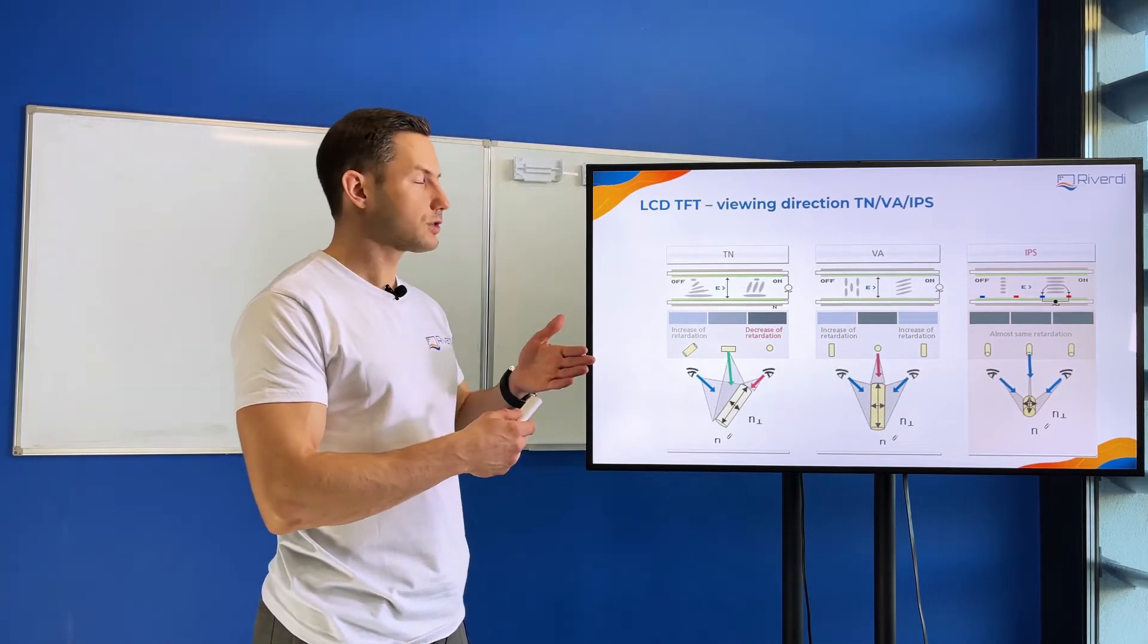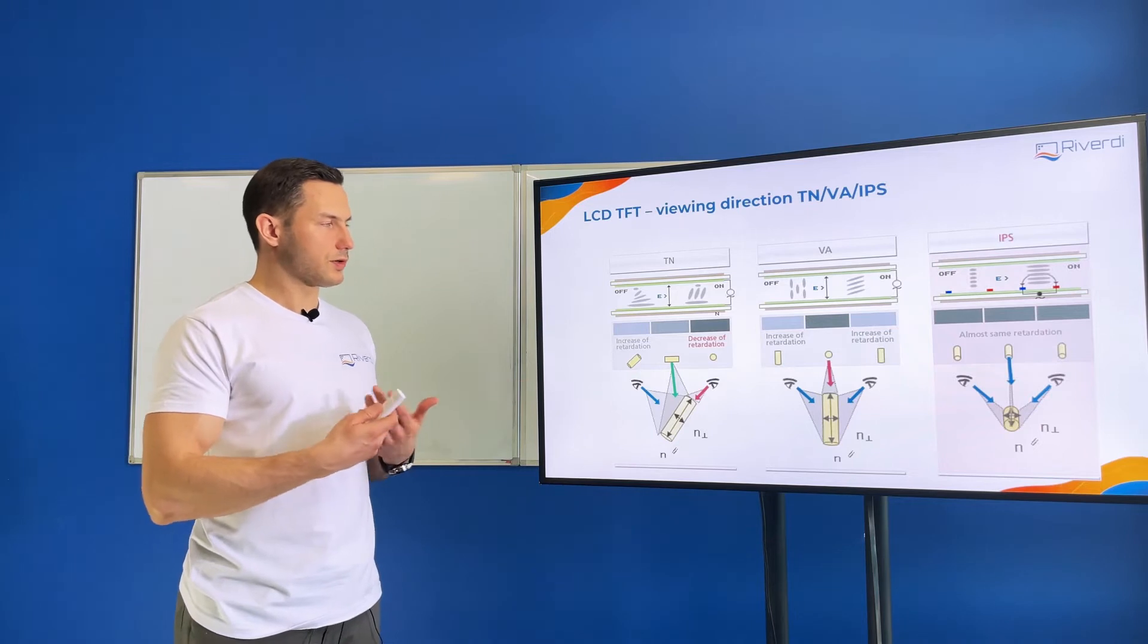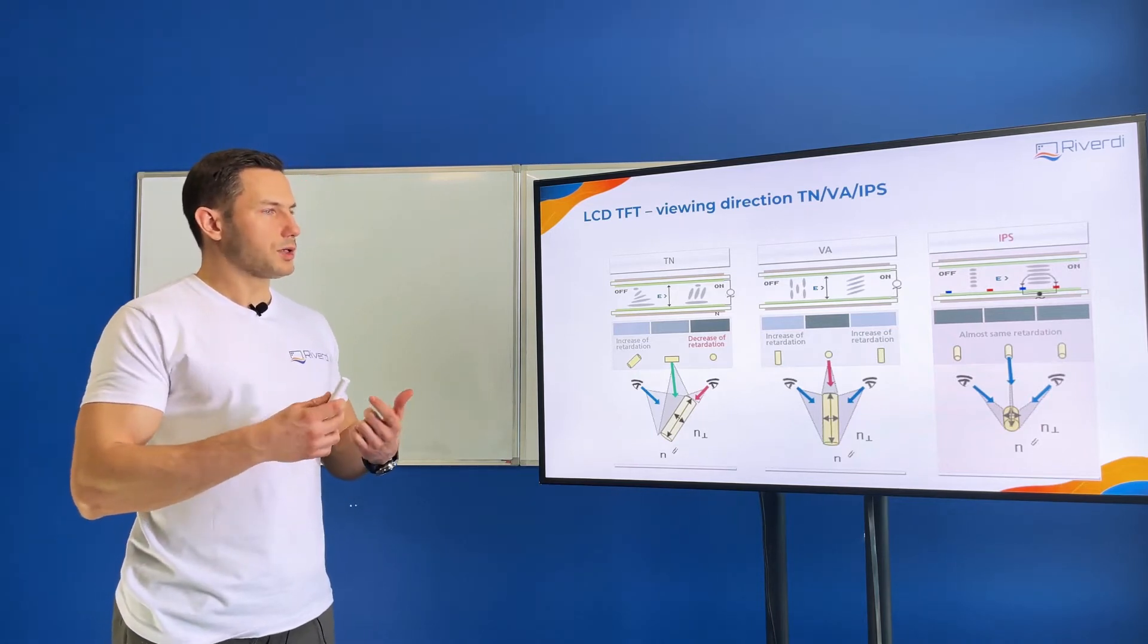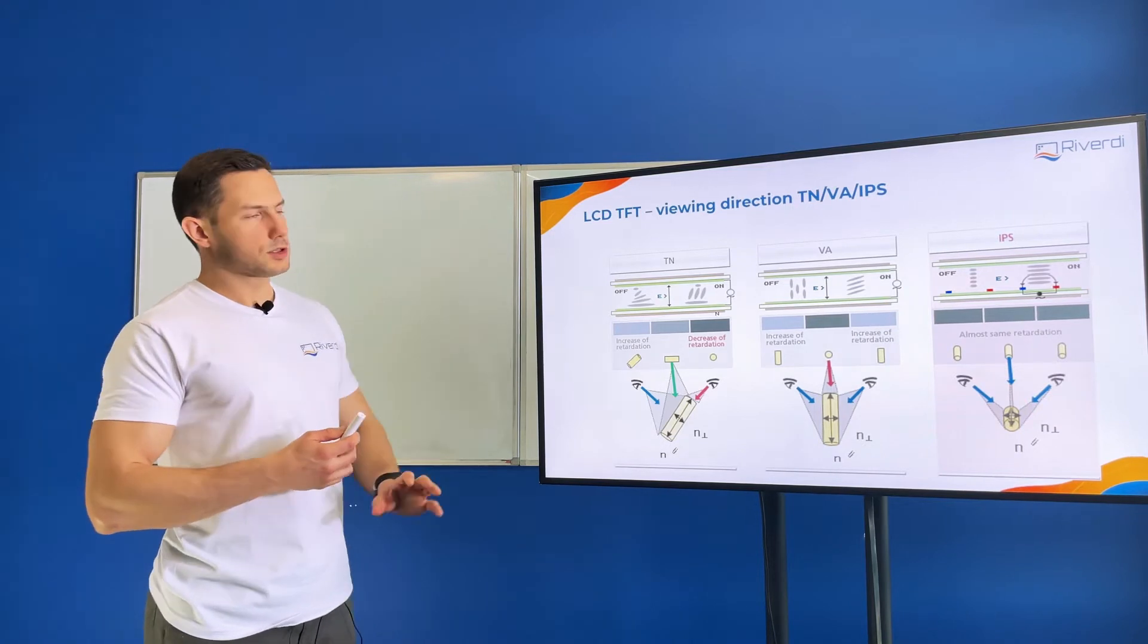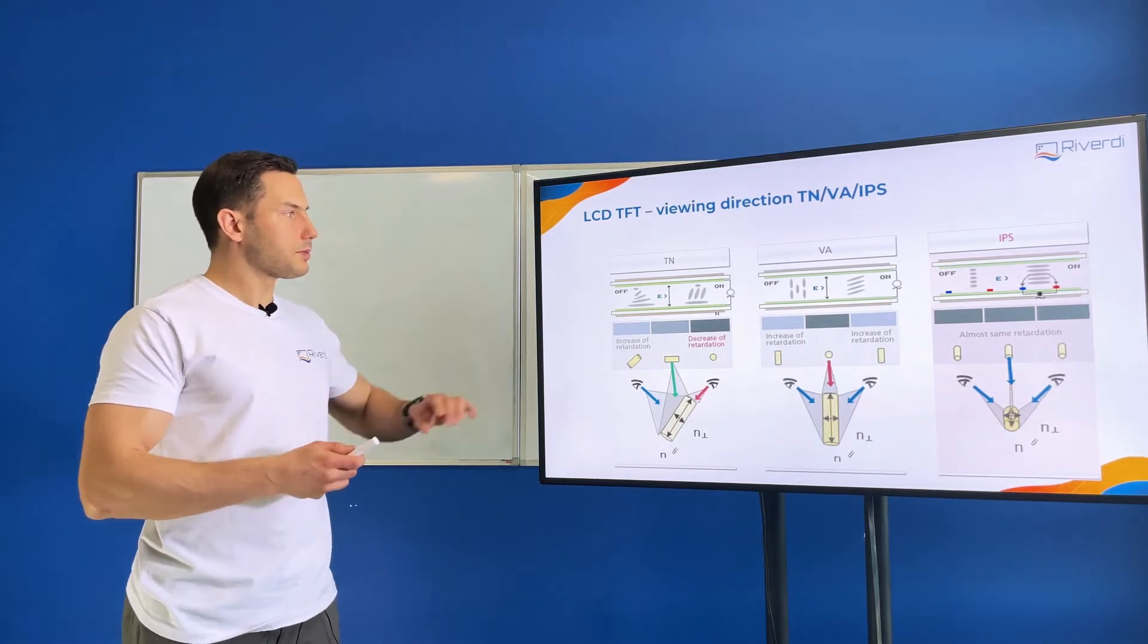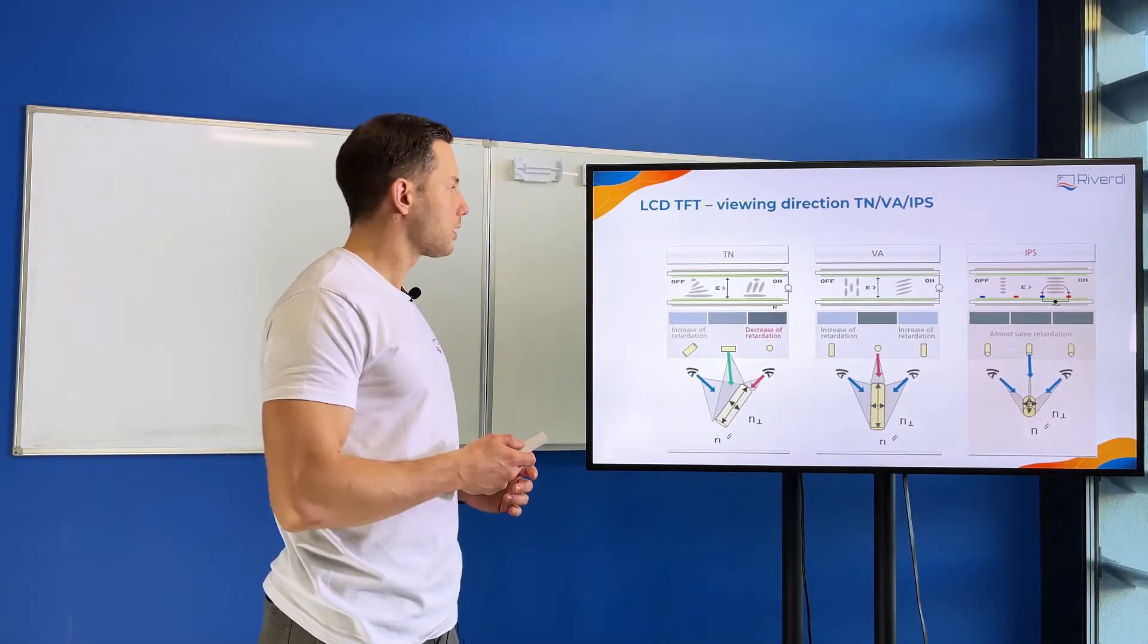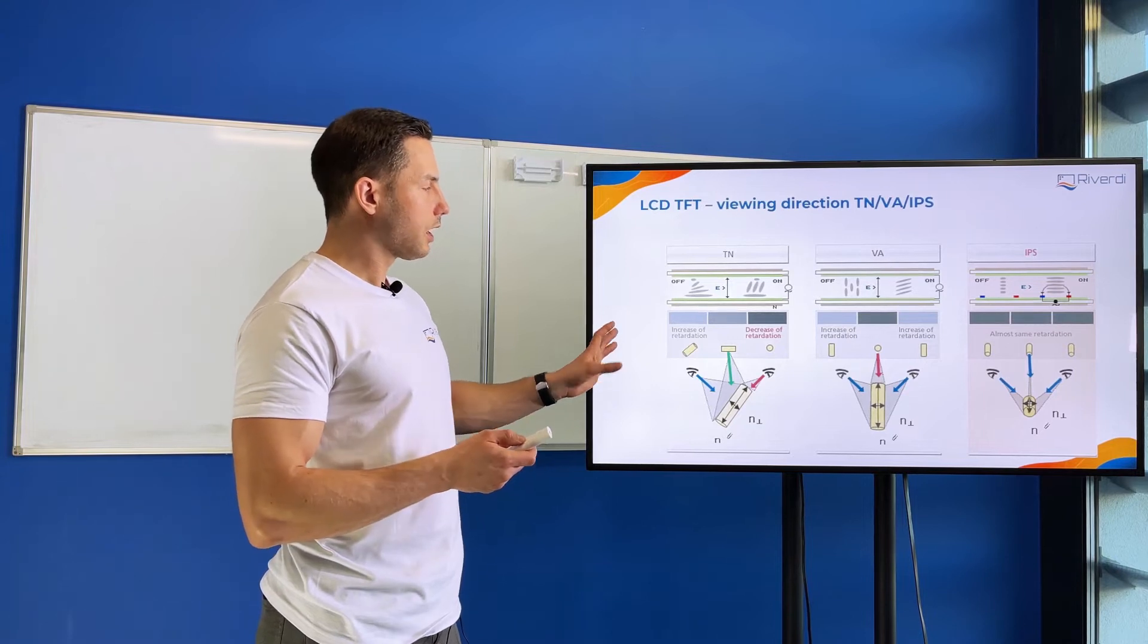So on the bottom side in a TN monitor we can place the gray scale inversion viewing angle, and this is still very practical because we don't look on the monitor from this side. So this technology can be cheap but also has some advantages for gamers because it's a very fast technology.